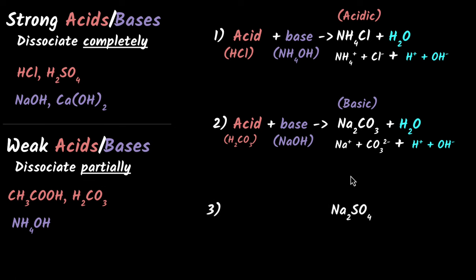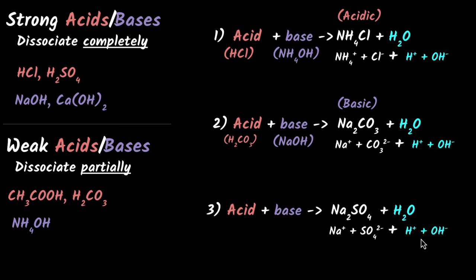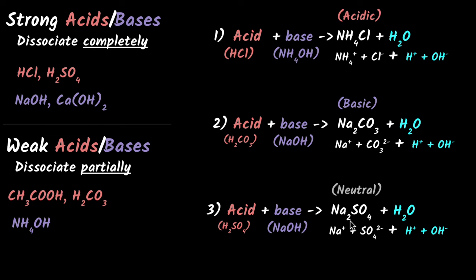Here's the third example. Acid and base must have combined to give the salt and water. Let's dissociate: I get Na⁺, SO₄²⁻, H⁺, and OH⁻. H⁺ must combine with SO₄²⁻, so the acid must be H₂SO₄ — a strong acid. And Na⁺ with OH⁻ gives NaOH — a strong base. This time, a strong acid is combining with a strong base, so neither dominates, which means this must be a neutral salt. Similarly, if we had a weak acid combining with a weak base, we would again get a neutral salt. And this is how we can identify whether a salt is acidic, basic, or neutral.